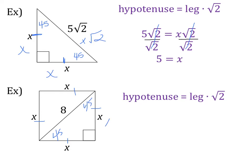So we're going to go ahead and use our pattern again, x, x, x root 2, or hypotenuse equals leg root 2.